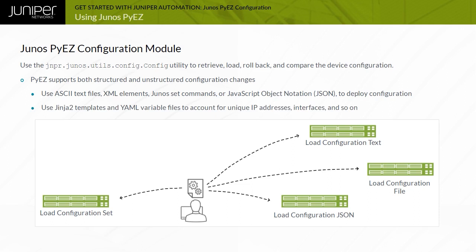Unstructured configuration changes can leverage Python Jinja2 templates to deploy configuration containing unique device-specific configuration values. Structured configuration changes require that you create tables and views that define specific resources. Structured configuration changes are not covered here.